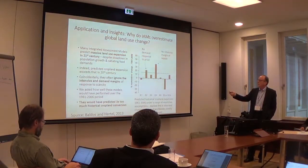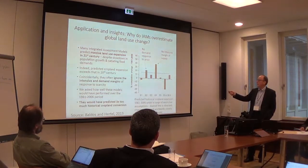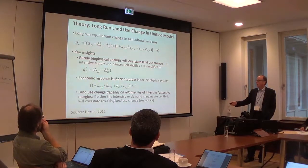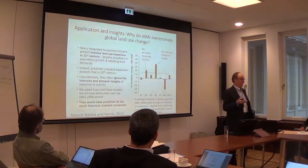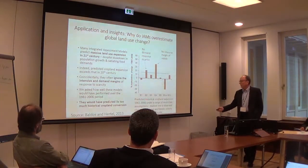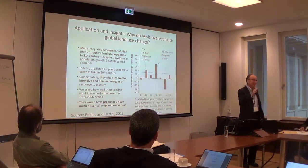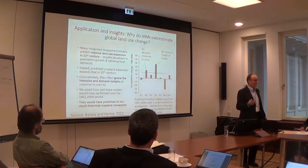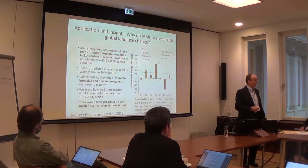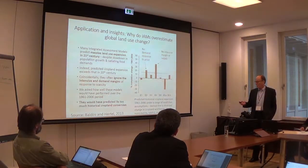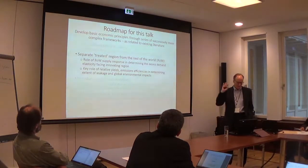Many integrated assessment models ignored demand response and the intensive margin of supply. If you ran those models over history, you would find they generate three times too much land conversion over the historical period, because they're omitting these responses. So ignoring the economic margins of response isn't just a trivial buffering effect—it's a very large effect that can lead to very misleading, dire predictions about using up all our land to feed the world in 2050. That's unlikely to be the case when you build in these other margins of adjustment.